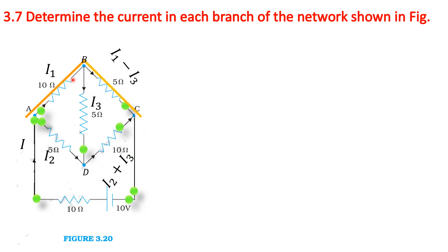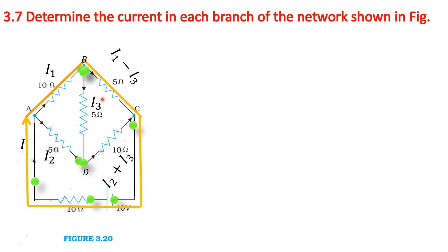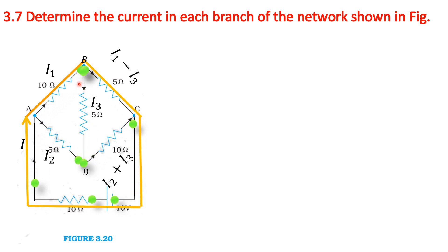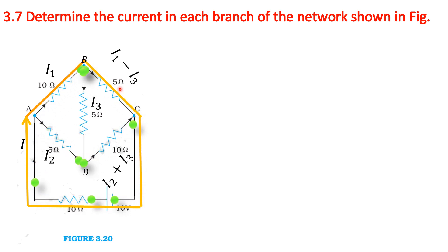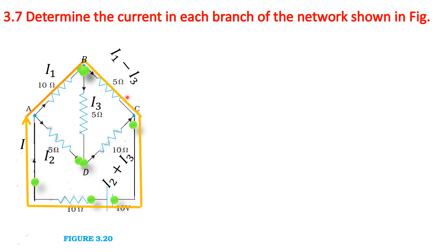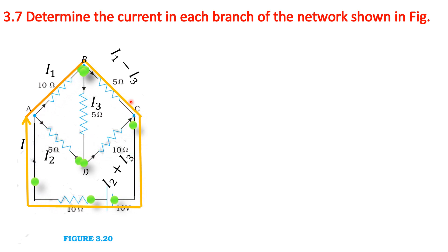Next, we consider the A-B-C-E-A closed loop and apply Kirchhoff's voltage rule. The voltage rule states: when the loop direction and current direction are the same, the potential difference gets a positive sign, calculated as I into R. If the loop and current directions are opposite, the potential difference gets a negative sign. For this loop, all three resistors have the same loop and current directions.